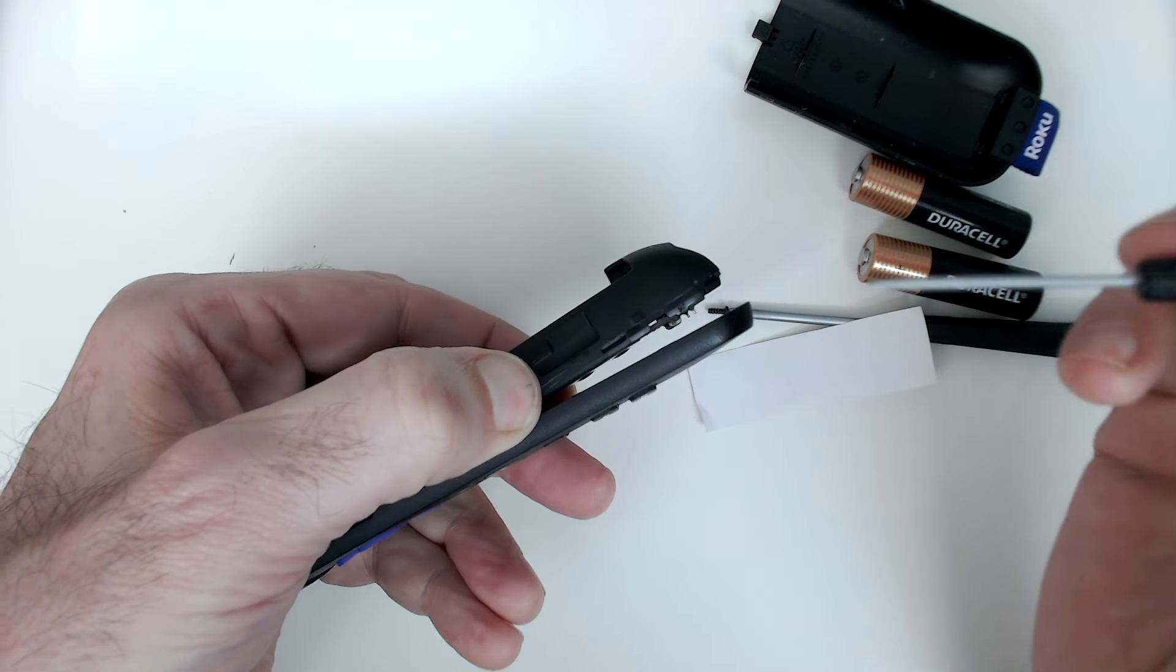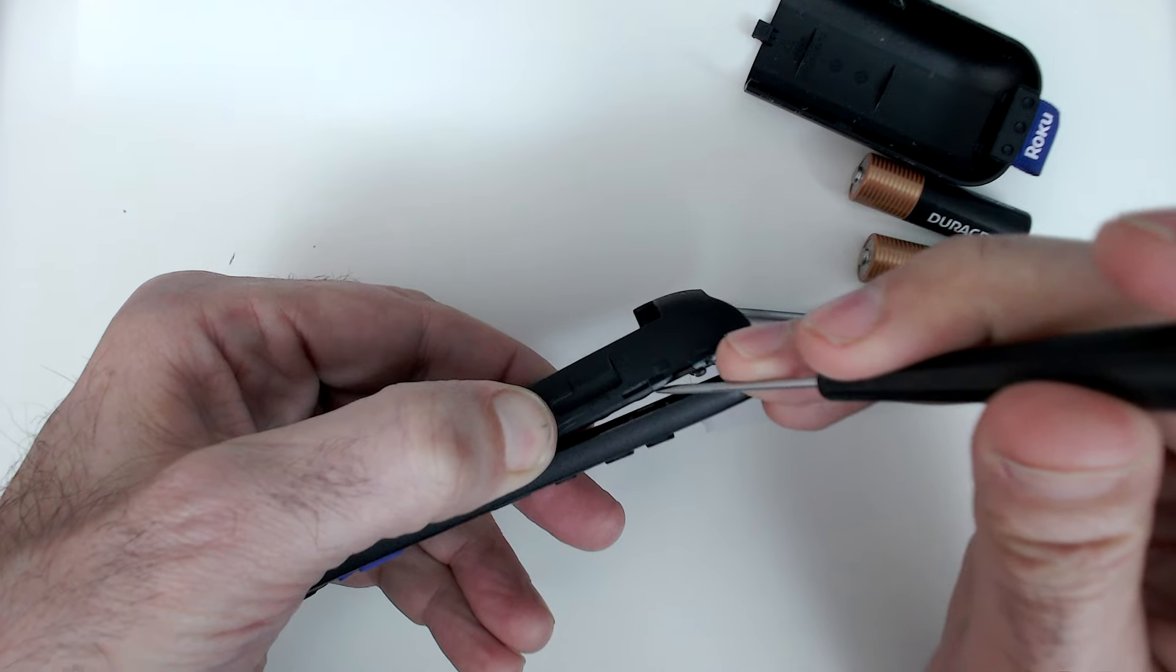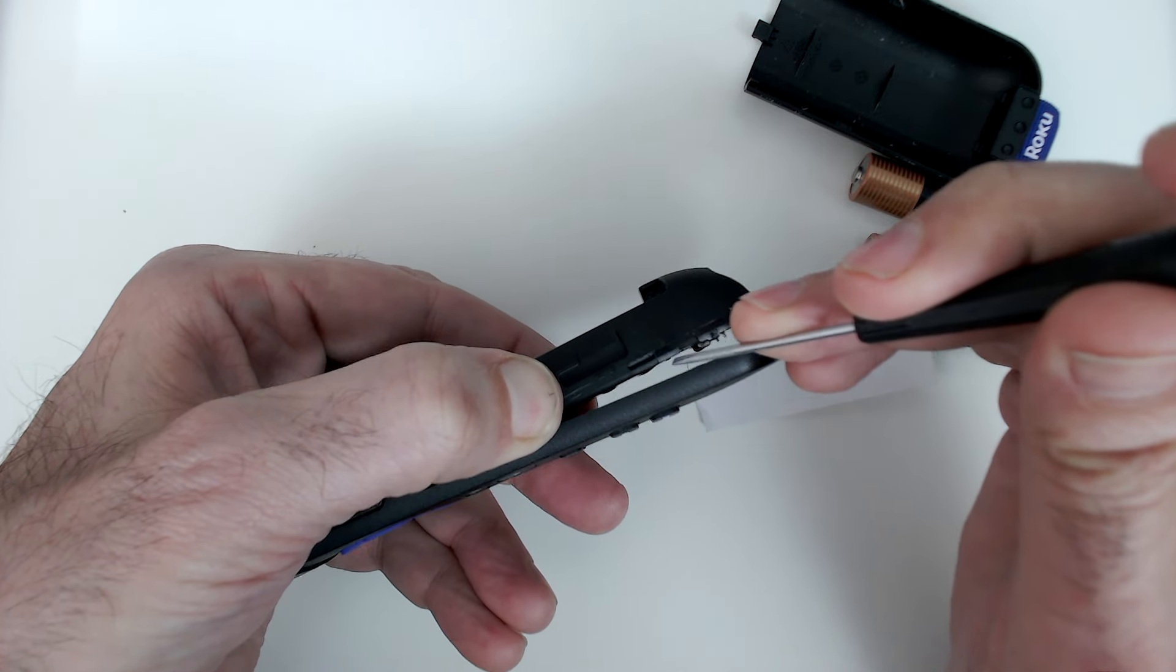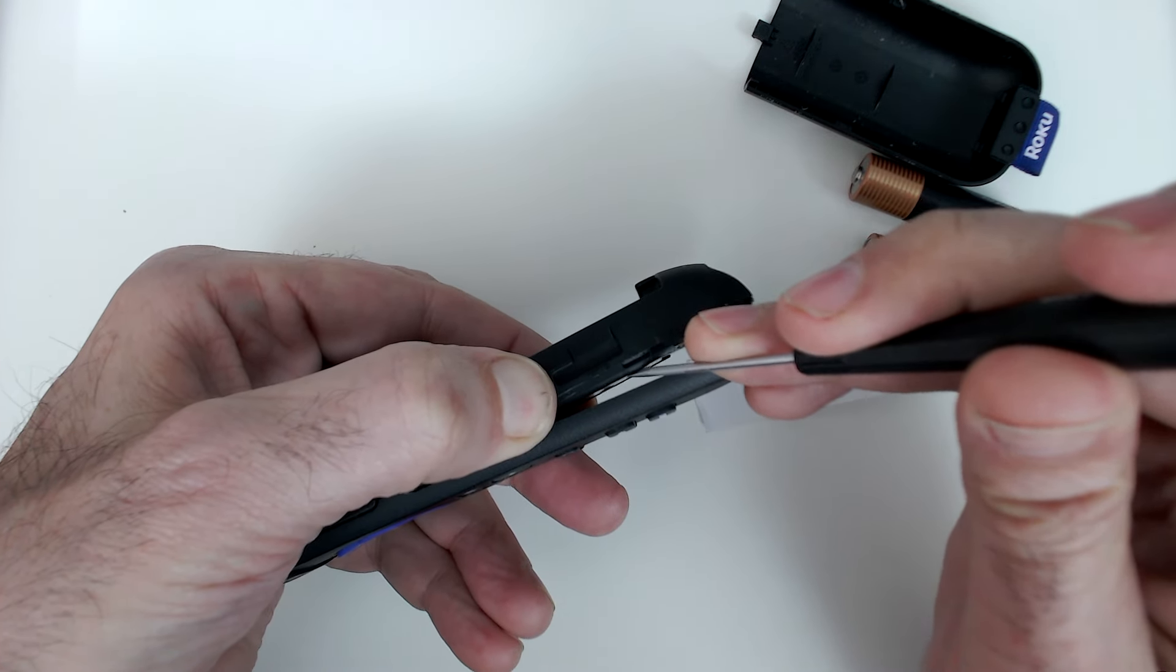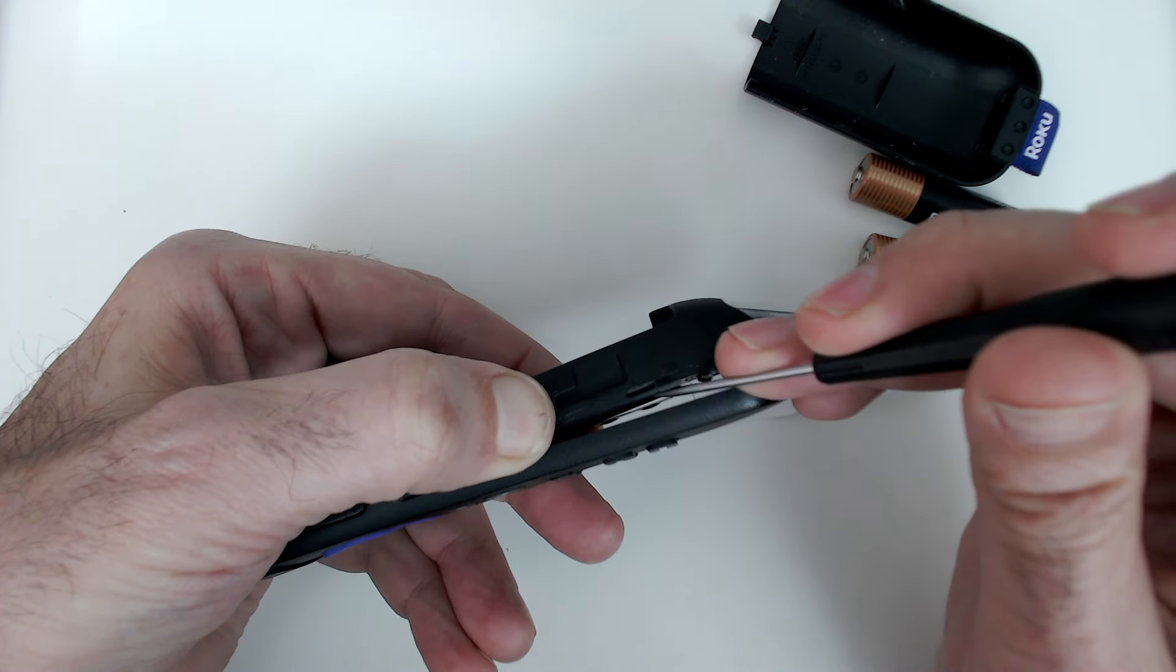See that gap? In there you'll see a very thin piece of plastic that's between the rubber buttons and the circuit board. That's got little blisters on it, and those blisters have conductive material that closes the circuit when you press the buttons.